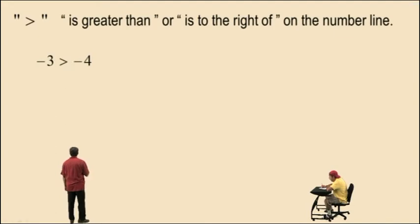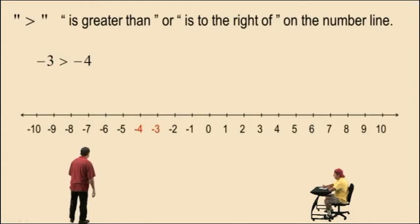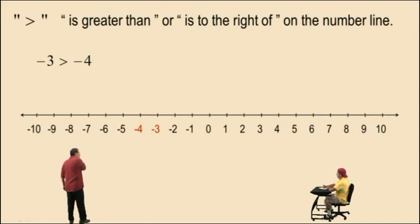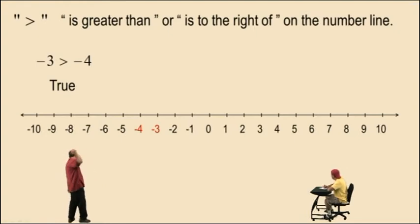Now watch, Charlie. Negative 3 is greater than negative 4 — is this a true or false statement? Well, that might be difficult unless you know how everything is arranged on the number line. So let's look at the number line. Charlie, is negative 3 to the right of negative 4 on the number line? Yes. This is a true statement. It is true that negative 3 is greater than negative 4, because negative 3 is to the right of negative 4 on the number line.